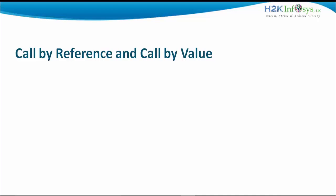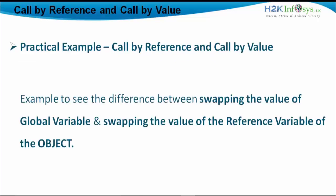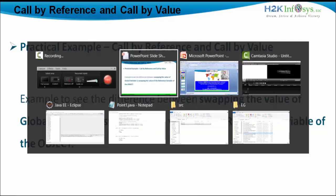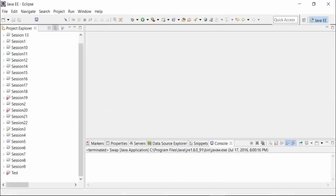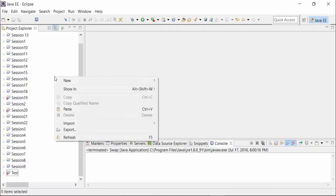Call by value is nothing but you are calling the values of the global variables after swapping, and call by reference means you are actually calling the values of the reference variables pinpointing to the object after swapping. We will directly see a practical example of swapping global variables and swapping reference variables and see how they react. I will directly go to the Eclipse IDE and create a project for session number 23.